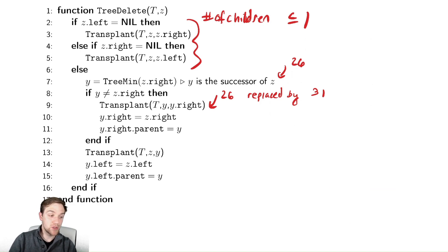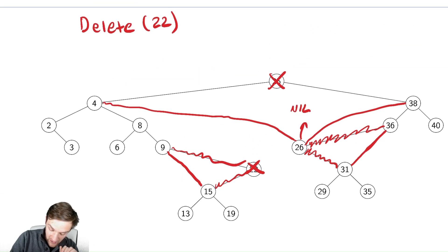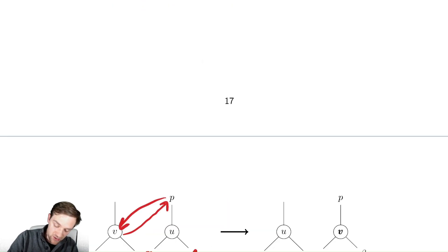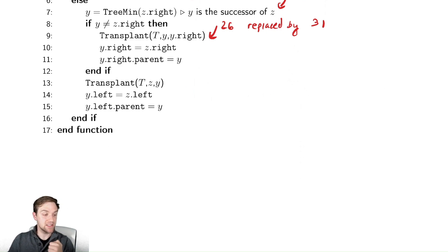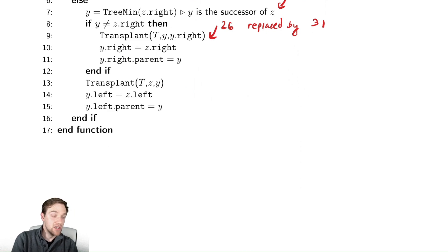Then we need to do some fixing of pointers. We're trying to assign the right value of the successor to be the value that was the node we deleted — this is our attaching of 26 to 38. I only need to do this if the node I'm replacing the deleted node with is not my immediate right child, to guarantee I don't lose whatever information was directly to the right of the deleted node. Any time I'm doing a connection, I need to assign the correct parentage so that pointers point in both directions correctly. This code attaches on the right from whatever is deleted and also promotes the right child of the successor to where the successor was.